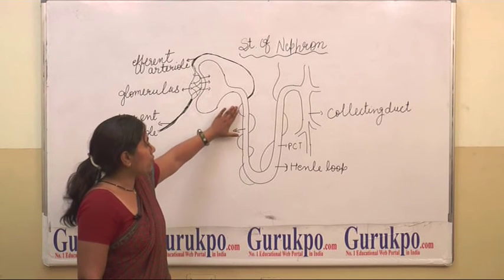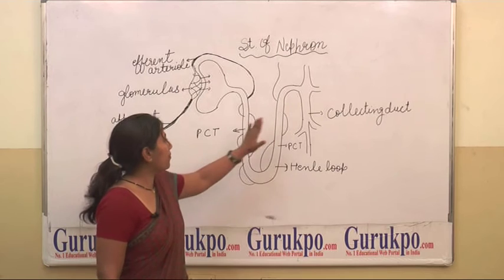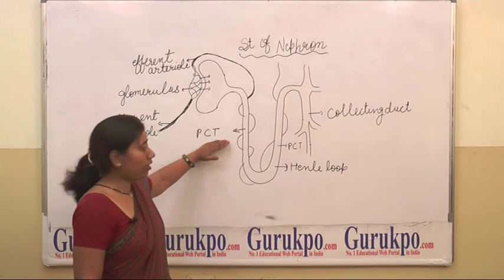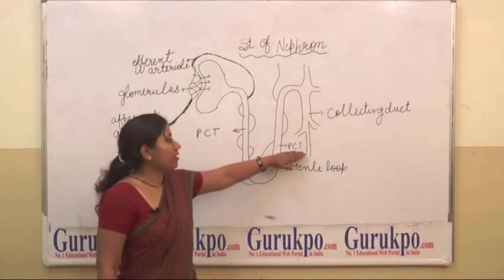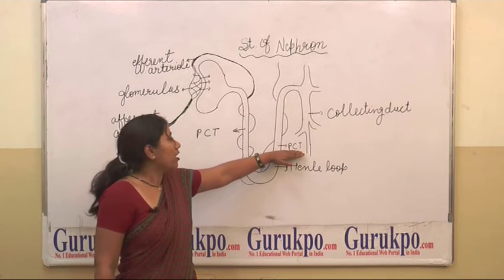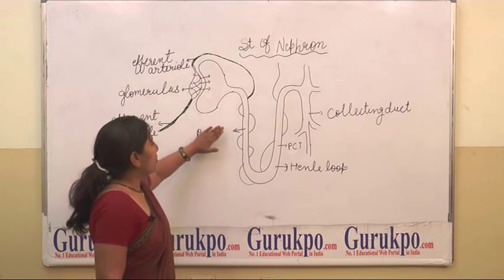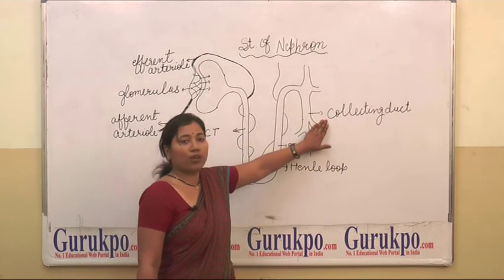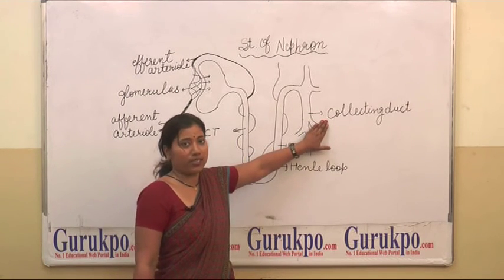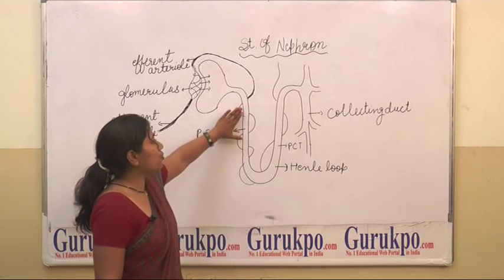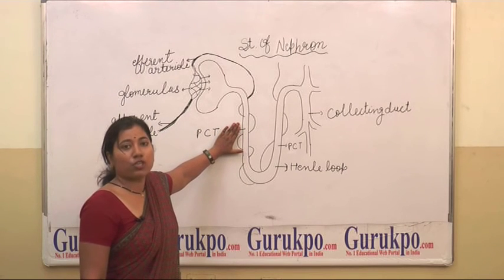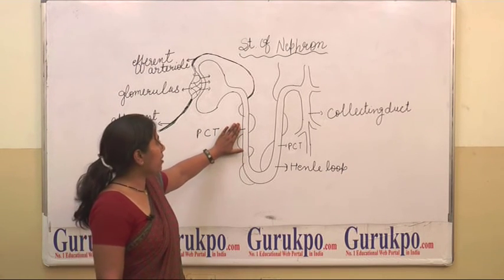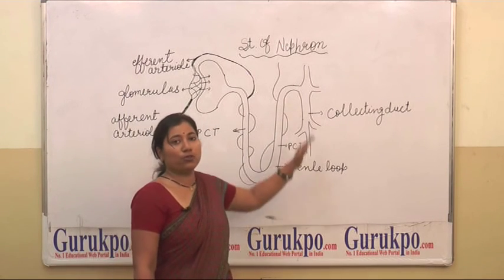Now, renal tubule. Renal tubule is made up of three parts: first is proximal convoluted tubule, loop of Henle, and distal convoluted tubule. The distal convoluted tubule ends in collecting ducts. All the useful material like amino acid, sugar, vitamins, etc., are reabsorbed in the renal tubule.